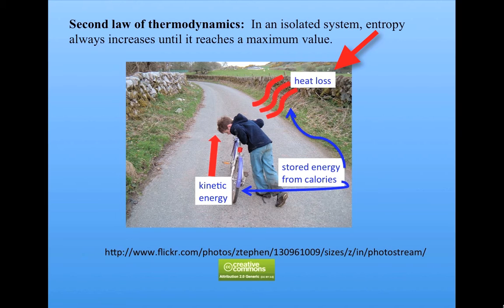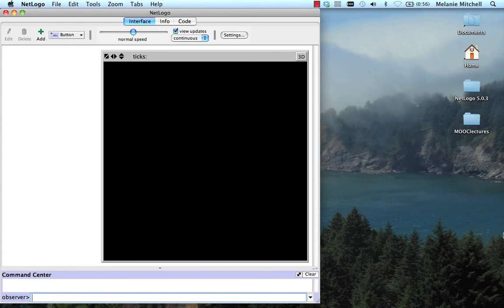Entropy can be thought of as a measure of disorder in a system. And the second law of thermodynamics then says that disorder in a system always increases until it reaches a maximum value. Let's illustrate this by a simple example.